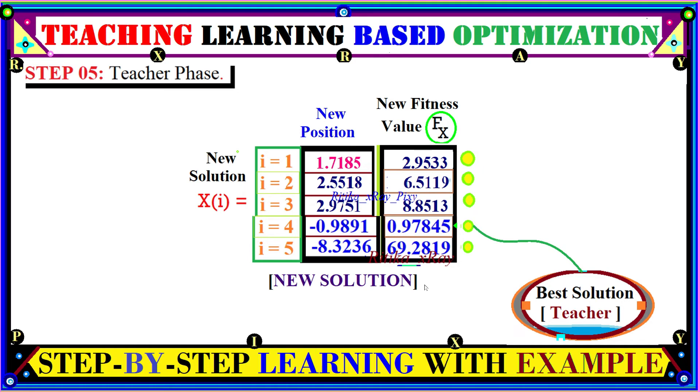This is the updated solution — we have the new positions and new cost function values. Among all, the best is the fourth individual again.